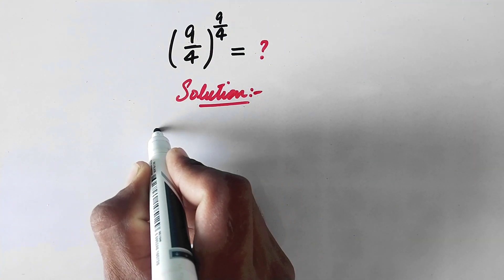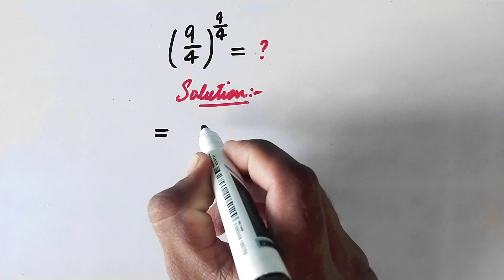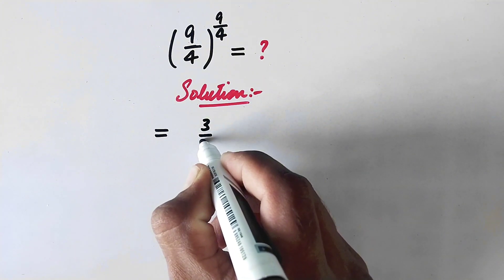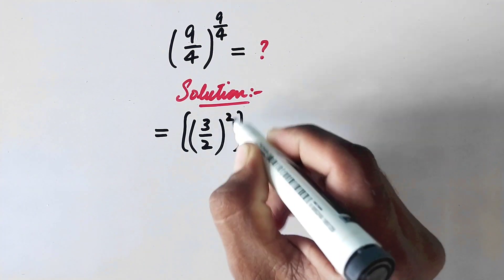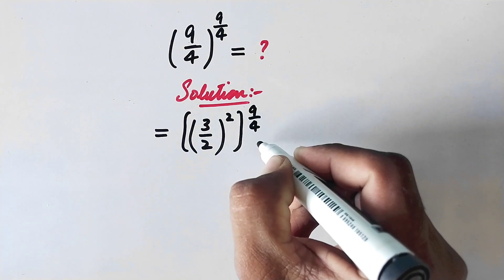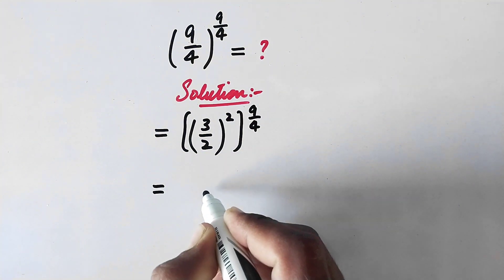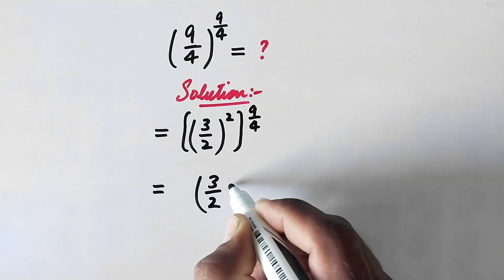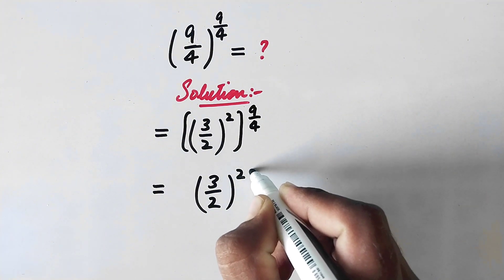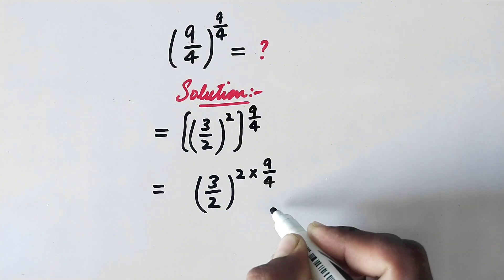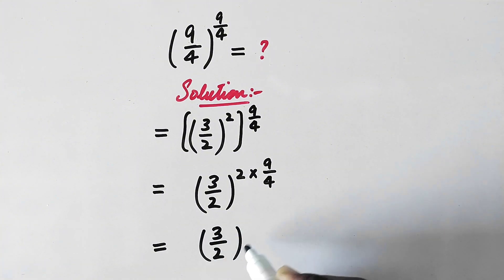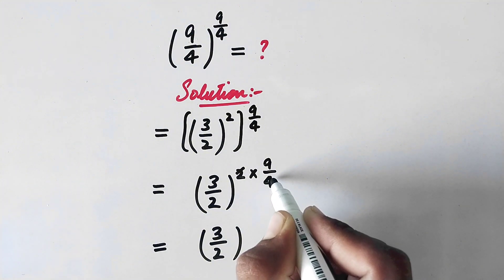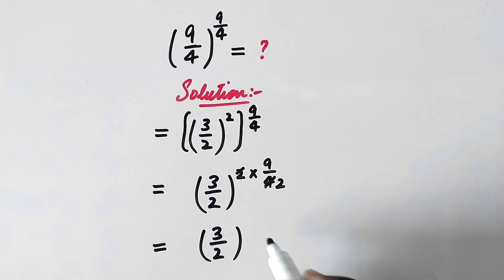So here in the first step, we will write it equal to: this 9 over 4 can be written as 3 over 2 to the whole power squared, then this power 9 over 4. Now we will write it as 3 over 2 to power 9 over 4, so here we will get 3 over 2 to power — this will be 2 times 1 is 2 and 2 times 2 is 4 — so here it is 3 over 2 to power 9 over 2.